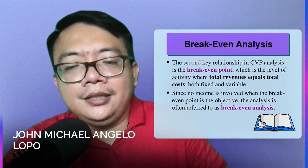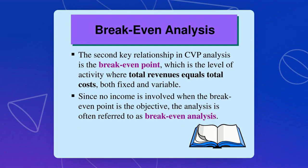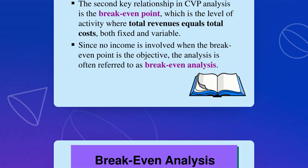Break-even point is a key relationship in CVP analysis, also known as break-even analysis — it is the level of activity where total revenues equal total costs, both fixed and variable. Since net income is zero, there is no net income and no net loss. Meaning, you worked for nothing — that's the meaning of your break-even analysis.